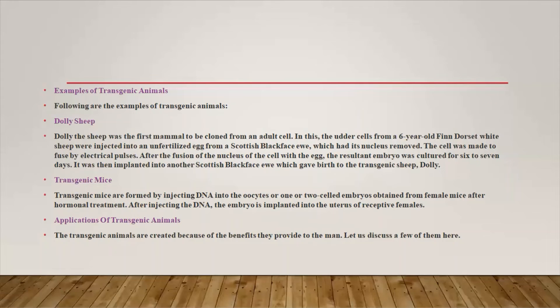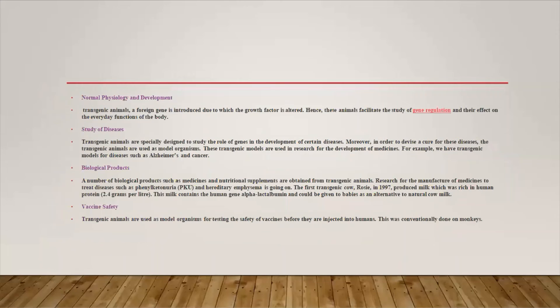There are many types of transgenic animals, such as transgenic pigs or swine, transgenic sheep for improvement of wool, transgenic fish, and transgenic cattle for the improvement of milk production.